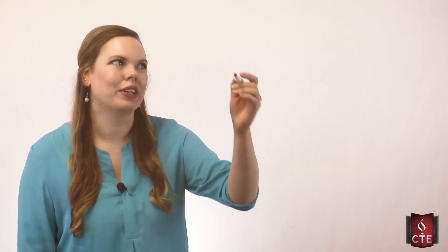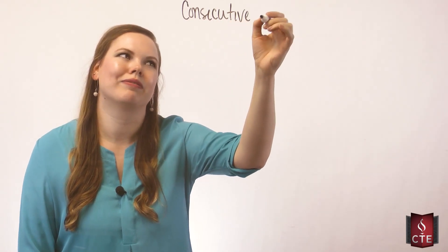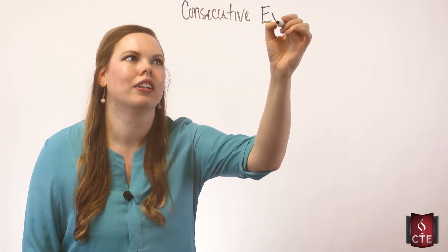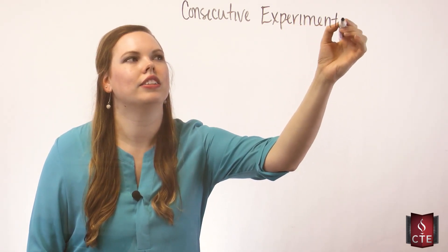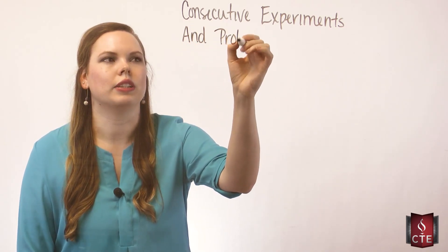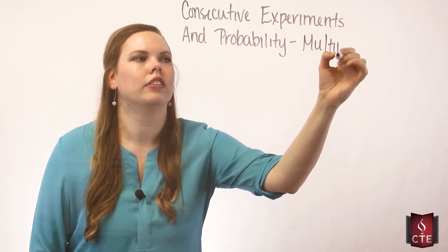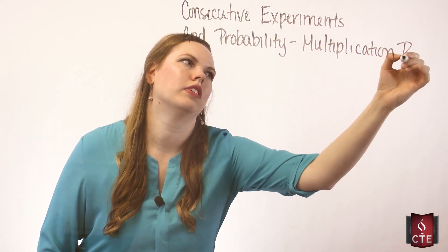Let's look at the AND probability rules, talk about when we use each of them, and then look at some examples. AND probability is when something is occurring more than once - consecutive events, or more precisely, consecutive experiments. For consecutive experiments, we use AND probability, which is the multiplication rule of probability.